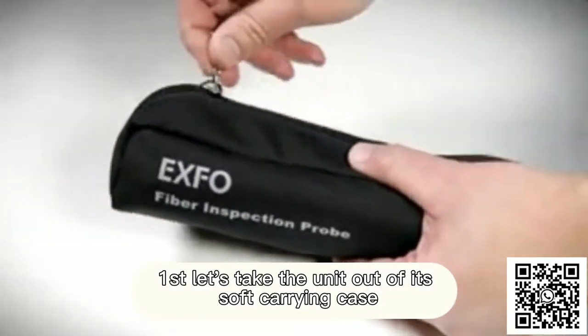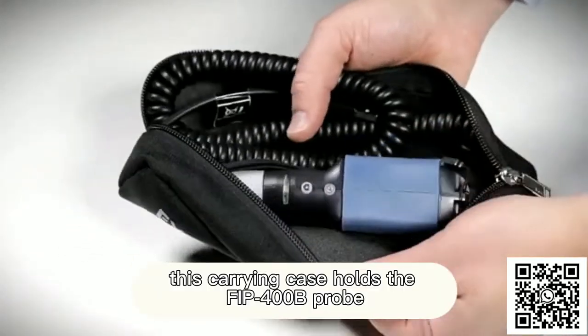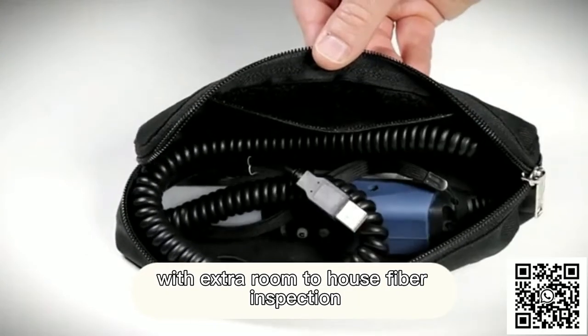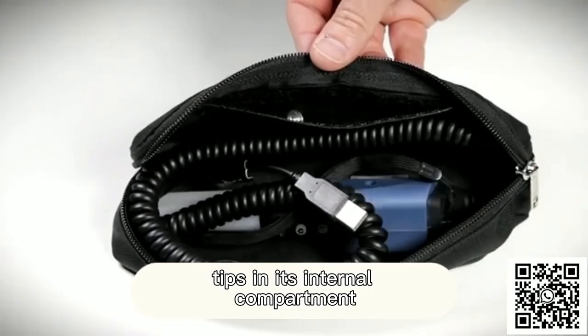First, let's take the unit out of its soft carrying case. This carrying case holds the FIP-400B probe with extra room to house fiber inspection tips in its internal compartment.